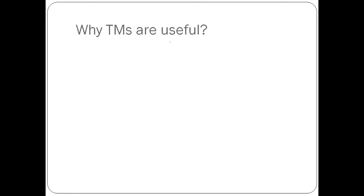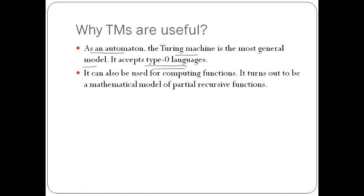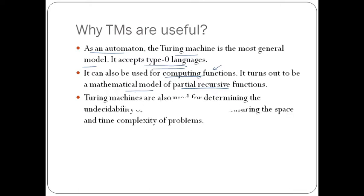Why are Turing machines useful? As an automaton, the machine is the most general model and it accepts type-0 languages, that is unrestricted languages. For computing functions, it turns out to be a mathematical model for partial recursive functions. These are also used for determining the undecidability of certain languages and measuring the space and time complexity of problems, making them very useful in the design and analysis of algorithms.